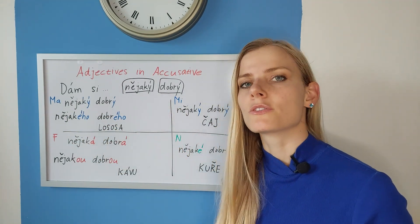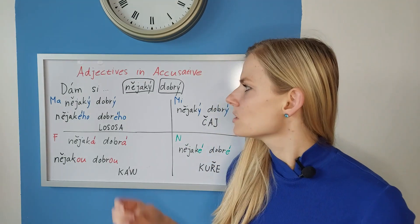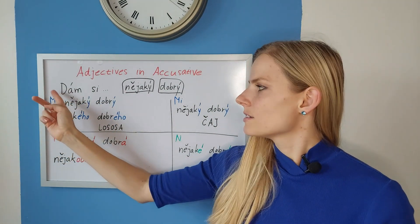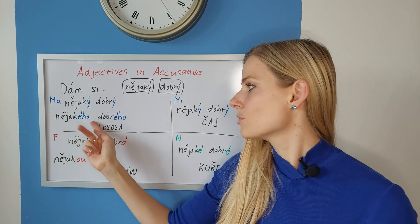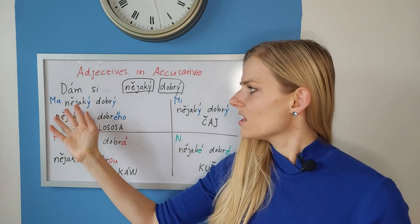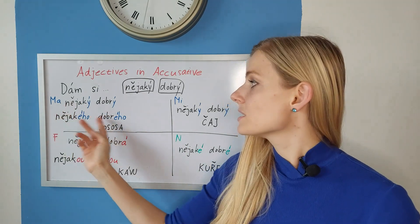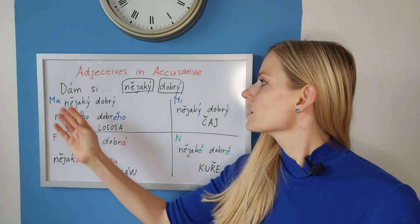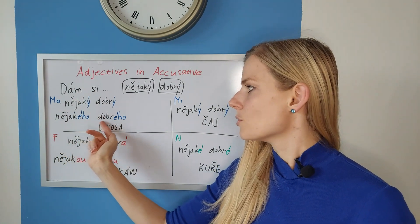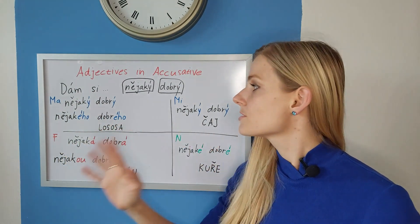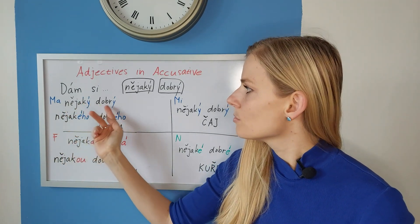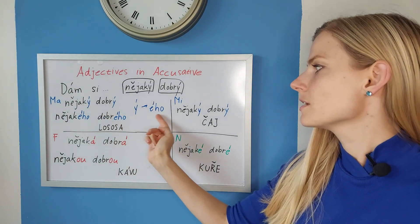You go to a restaurant and you want to say 'I want some good salmon.' We would be working with nějaký dobrý and the phrase dám si. So this would change: Dám si nějakého dobrého lososa — I'll have some good salmon. It would be the same with a different fish. Remember we had tuňák, tuna: Dám si nějakého dobrého tuňáka. The same rule. So nějaký changes to nějakého, dobrý changes to dobrého — for the masculine animate.